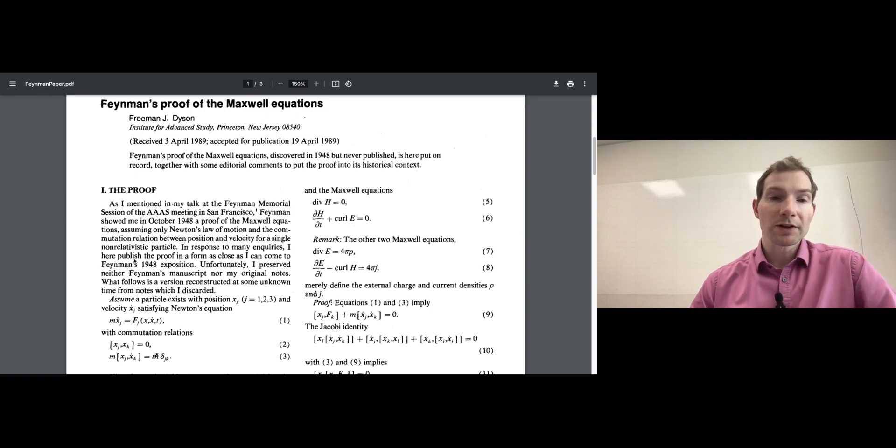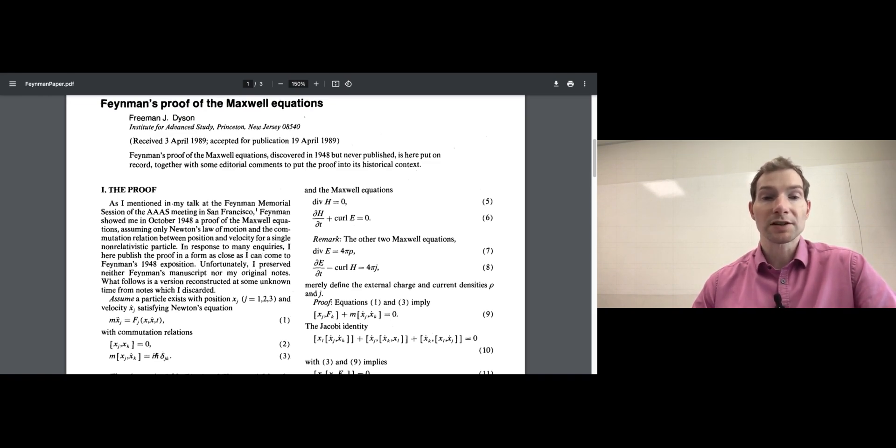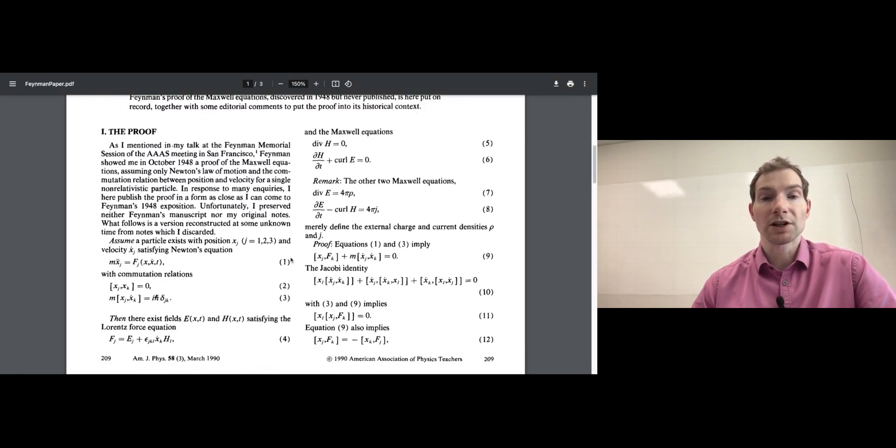Now, what the paper is about is basically a sort of proof by Feynman of Maxwell's equation, starting from assumptions 1, 2, and 3. Now, the assumptions 1, 2, and 3 are basically the following. So this is F equal MA on the one hand. So that's the very first equation. It's simply F equal MA from Newtonian mechanics.